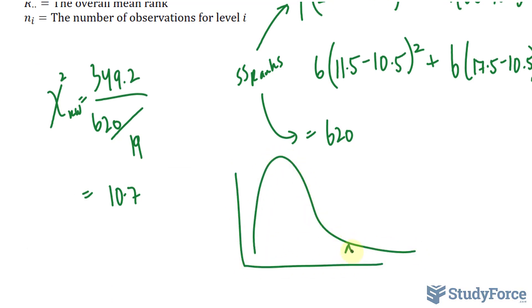In a chart that looks like this, 7.81 is right here, that's your chi-square critical. Our value falls in the rejection region. Our value is 10.7.